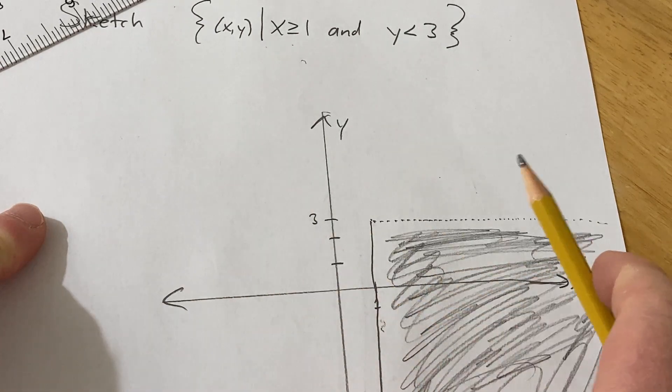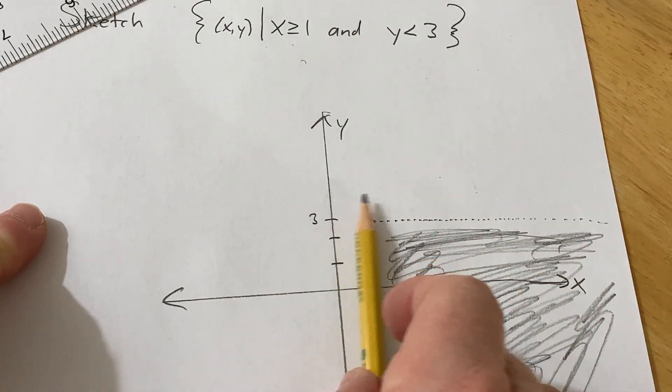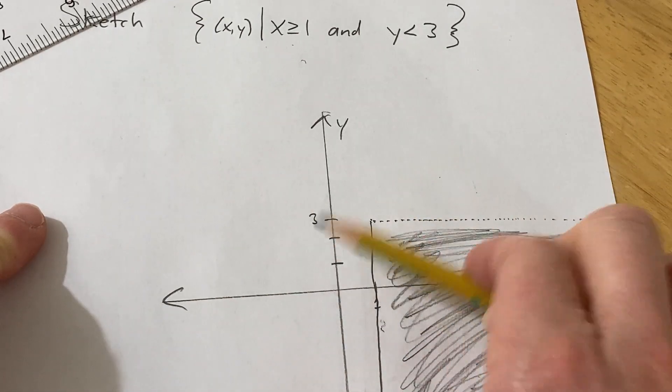But since x has to be over here, you're restricted to this region. Because if you just look at x greater than or equal to 1, it's all of this.